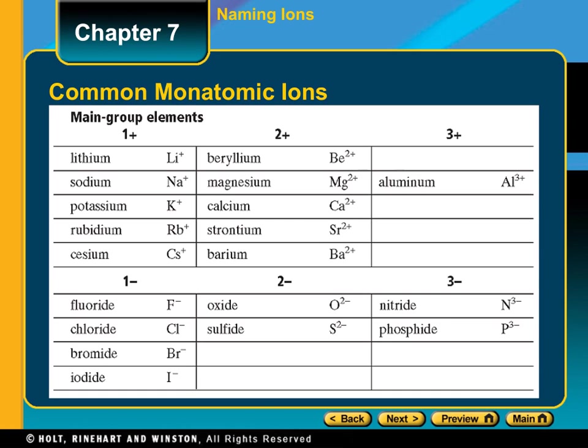This graphic shows some of the most common monatomic ions. You can see sodium, potassium, calcium, strontium, aluminum — they're all positives. They all have just the regular name and then you add the word ion. In the bottom section you can see the negative charges: you have negative one — fluoride, bromide, iodide — and you can see oxide and sulfide, nitride and phosphide.